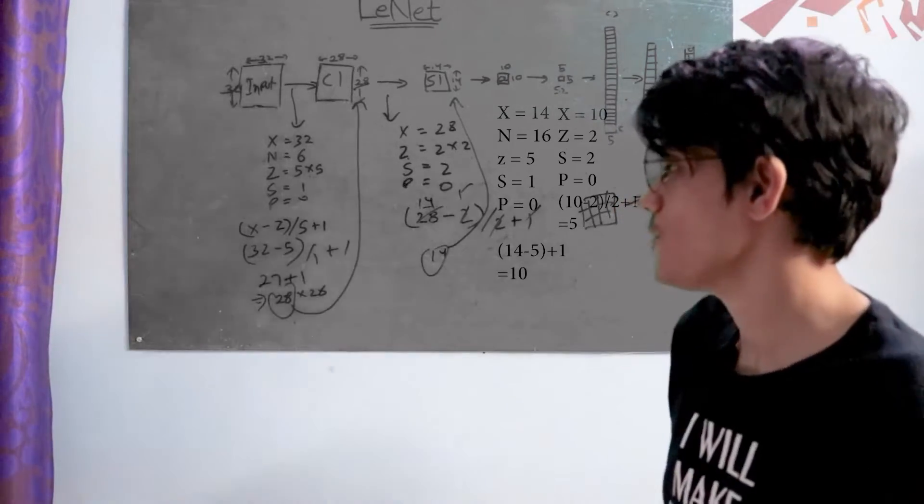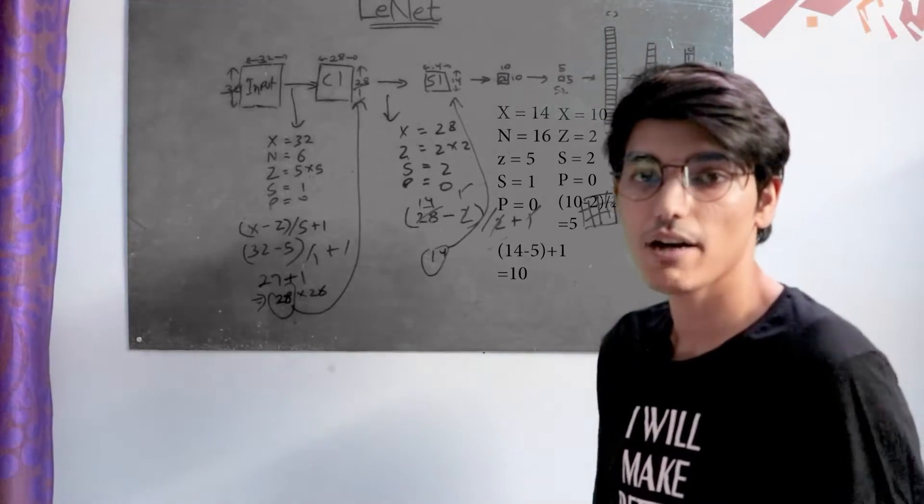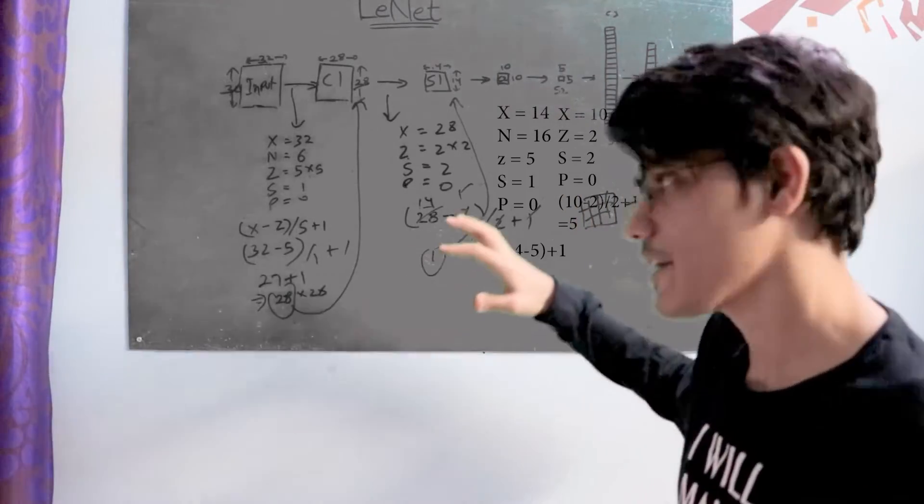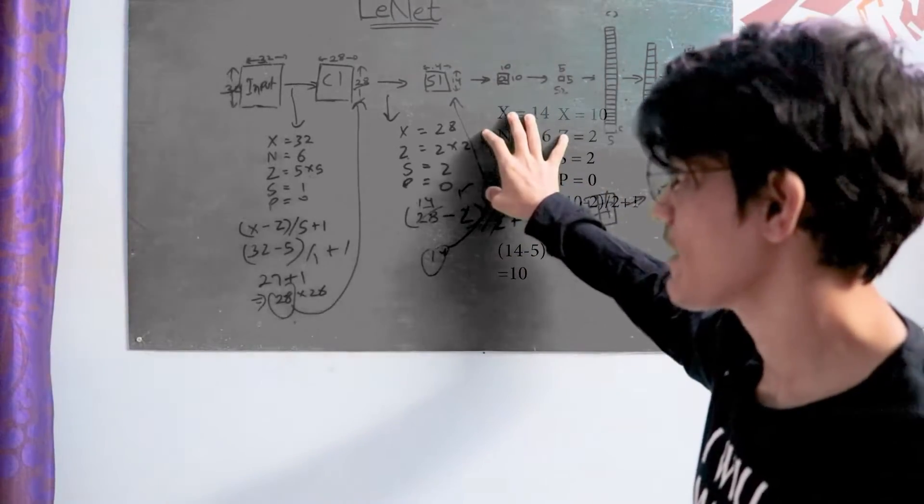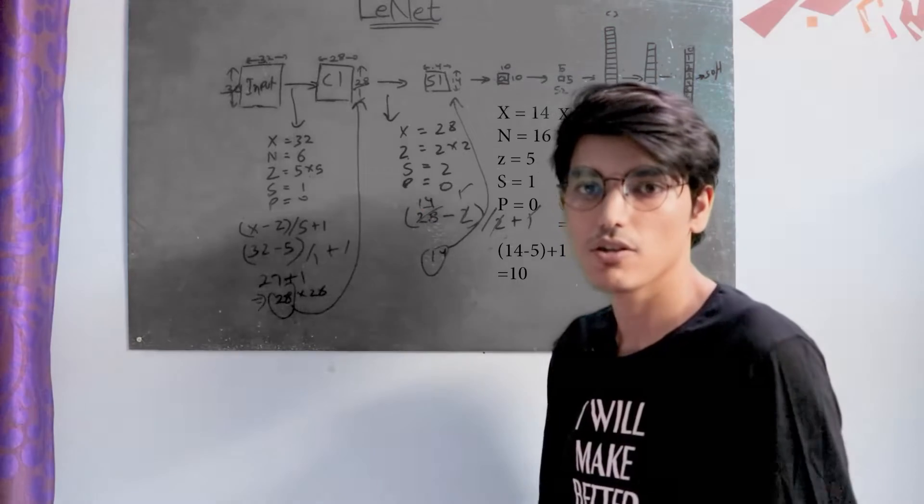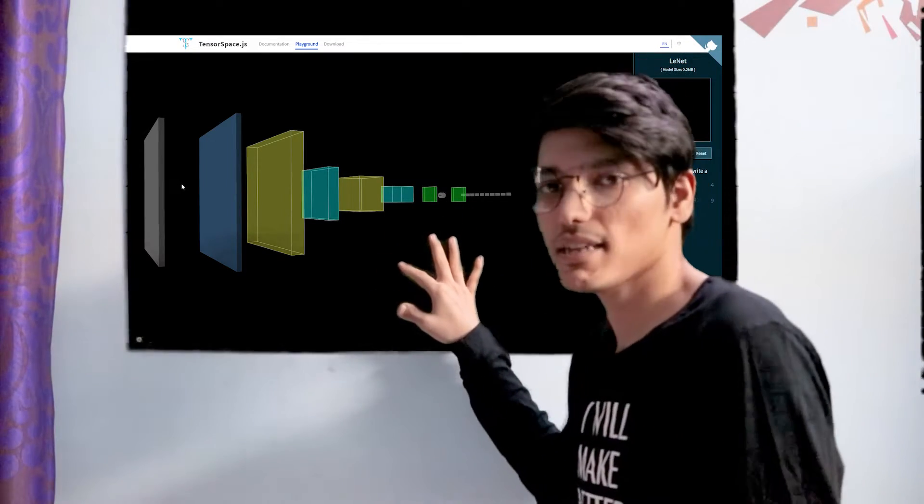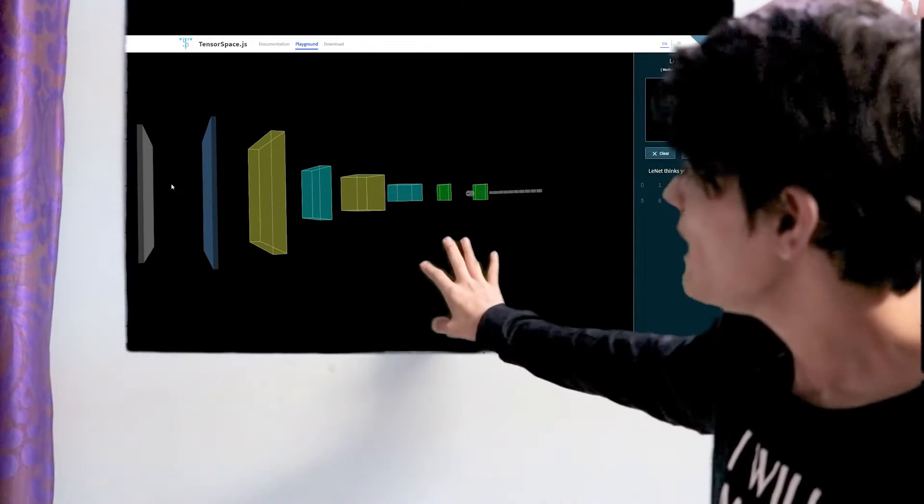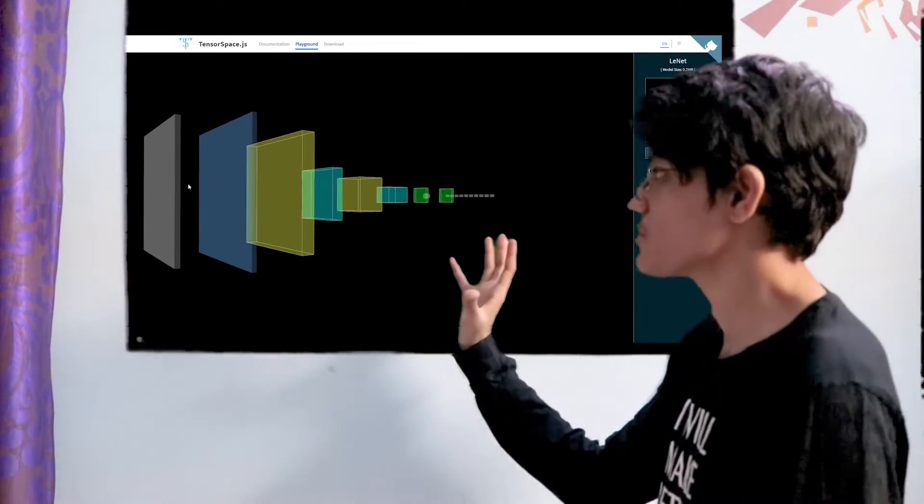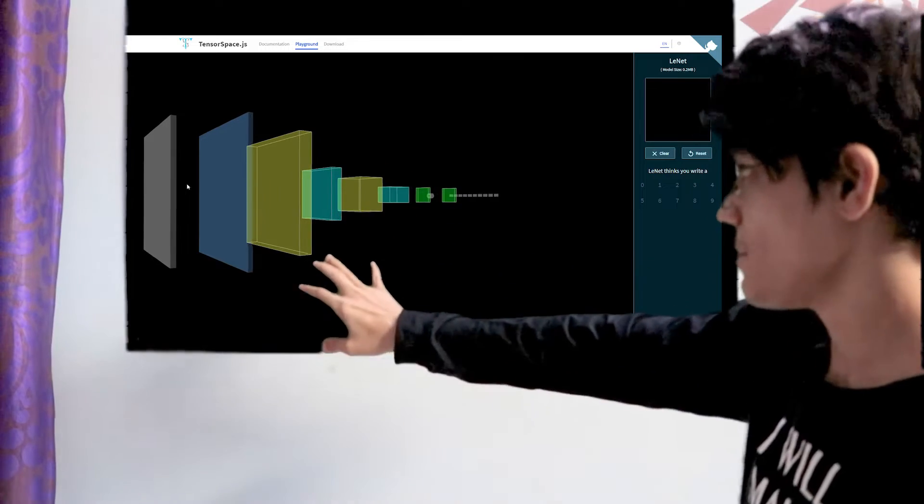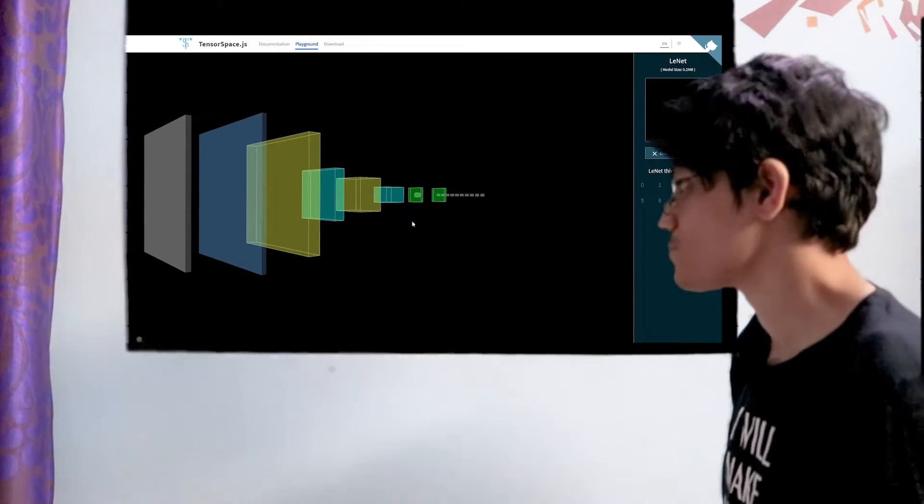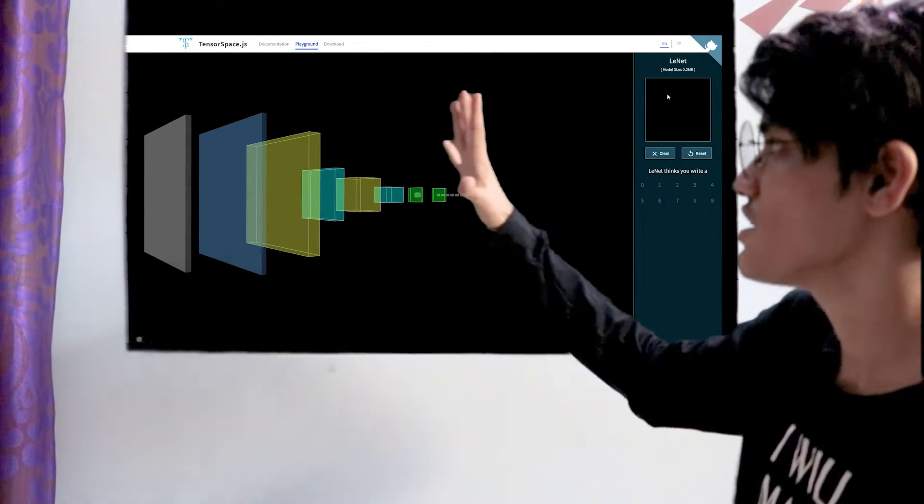That's all for this part. In the next part, we will see the 3D architecture of LeNet, how predictions are made, and how each convolution is applied.